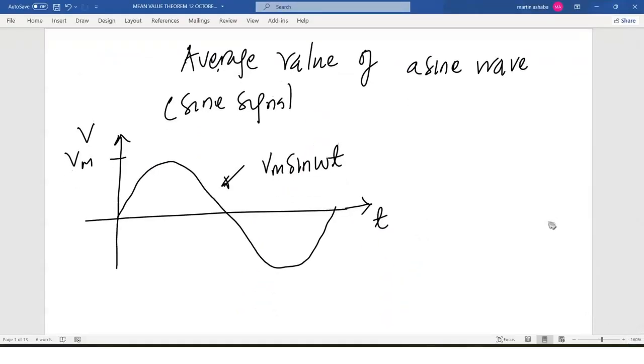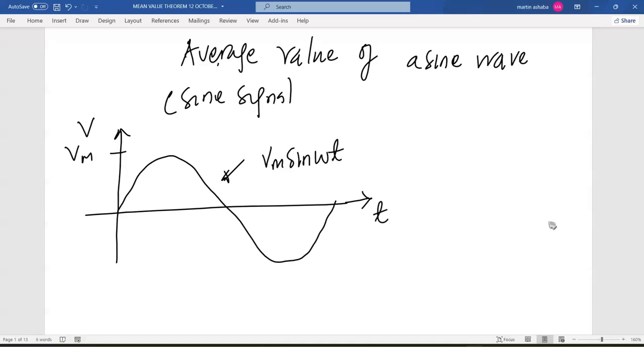In this discussion, we are going to look at the average value of a sine wave or a sine signal. Assume you have a voltage that is represented by the signal Vm sin(ωt), where omega is the angular frequency of this signal and Vm is the amplitude or the peak value of the voltage.